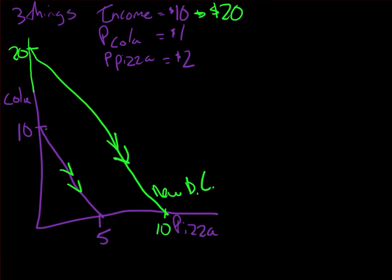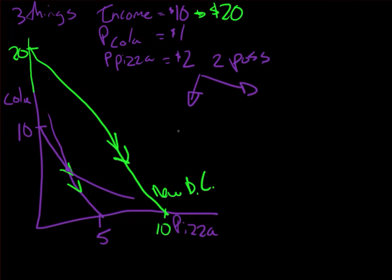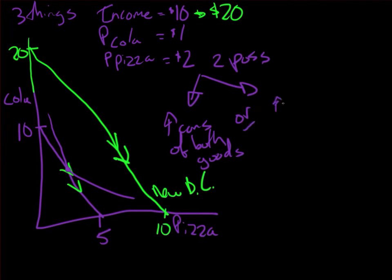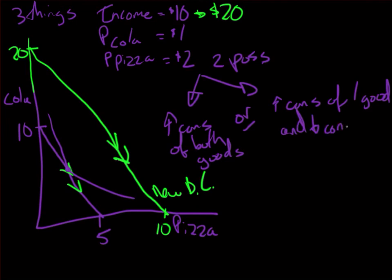What would happen in terms of consumption? If I had my initial budget constraint and the initial indifference curve that went with it, that was my optimal point. In the new scenario there are two possibilities: either I can consume more of both goods, so my optimal consumption increases for both, or I could have the situation where I consume more of one good but less of the other.